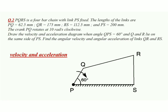In this question we have to find out the velocity and acceleration of the different links of the mechanism. The input link, that is crank PQ, rotates at 10 radian per second clockwise. We have to draw the velocity and acceleration diagram when angle QPS is equal to 60 degrees, and find out the angular velocity and angular acceleration of the links QR and RS.